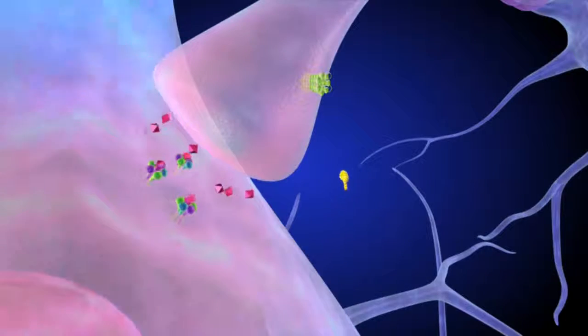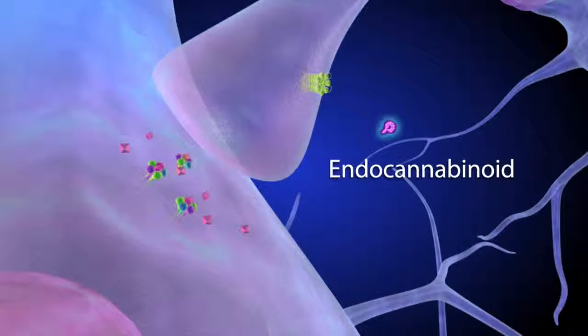Endocannabinoids are neurotransmitters that can indirectly affect dopamine signals by modifying the activity of other neurotransmitters such as GABA.